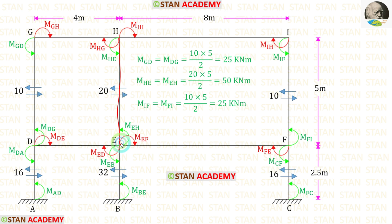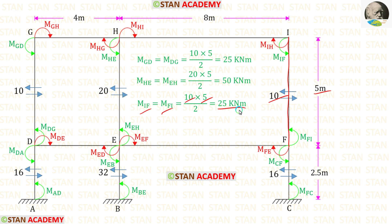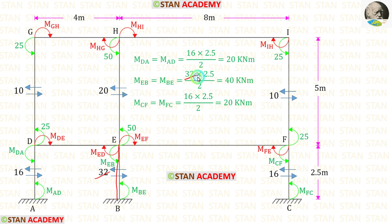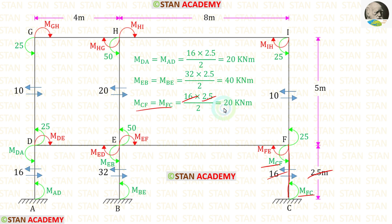For member HE (interior, top story), w = 20 and l = 5, giving M_HE = M_EH = 50 kNm. For member IF, w = 10 and l = 5, giving both moments = 25 kNm. For the bottom story exterior column (w = 16, l = 2.5), both moments = 20 kNm. For the interior bottom column (w = 32, l = 2.5), both moments = 40 kNm. For the other exterior bottom column (w = 16, l = 2.5), M_CF = M_FC = 20 kNm.